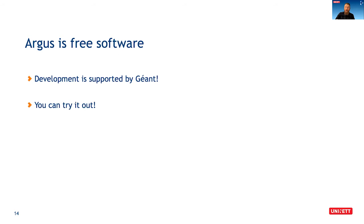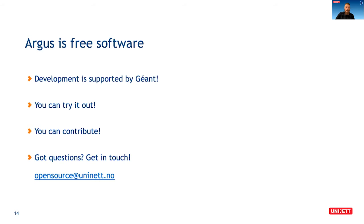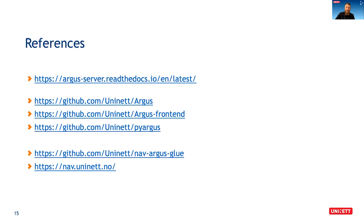Argus is free software and its development is supported by GÉANT — this is why we are here today. You can try it out and even contribute if you like. If you have any questions, you can get in touch using the email address for open source tools published by UniNett. The slides are all in the event page, so anyone who wants to follow the presentations can find them in the agenda.